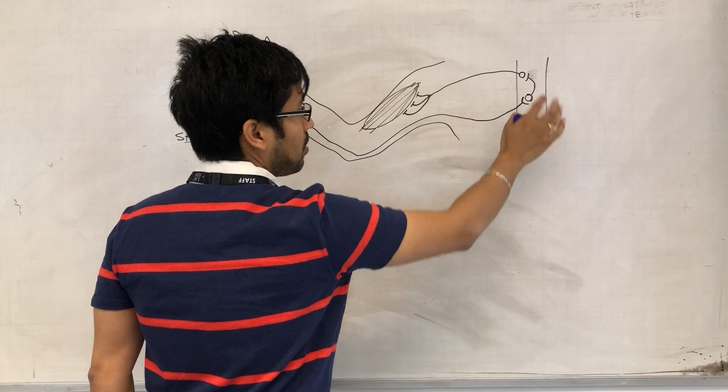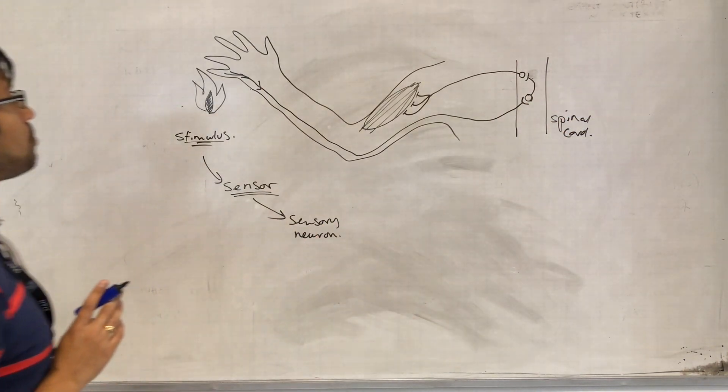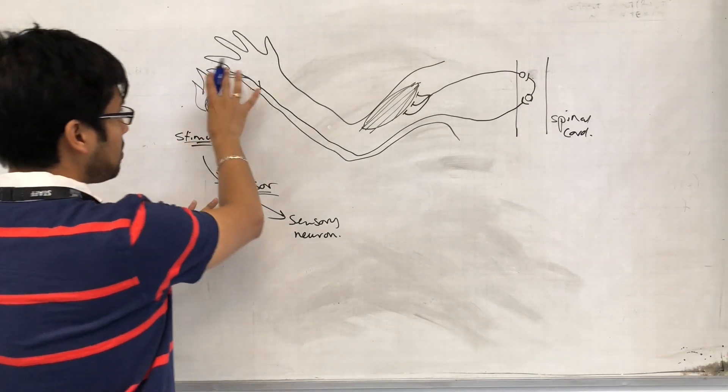This is our central nervous system. This is our spinal cord. So the sensor detects the heat.